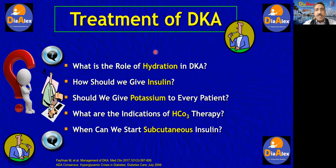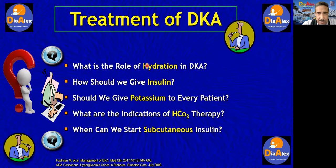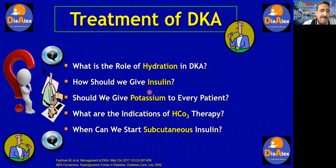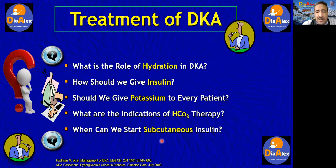Treatment of diabetic ketoacidosis will answer five questions: What is the role of hydration in DKA and how should we hydrate the patient? How should we give insulin? Should we give potassium to every patient with DKA? What are the indications for bicarb therapy? And lastly, when can we start subcutaneous insulin, meaning resolution of DKA and shifting the patient from intravenous to subcutaneous insulin?